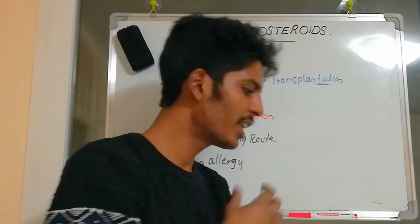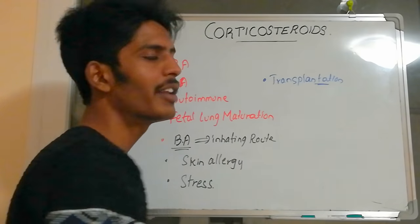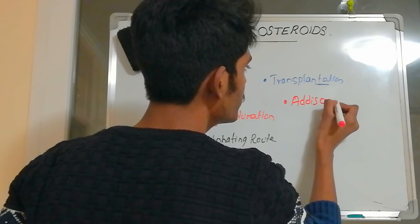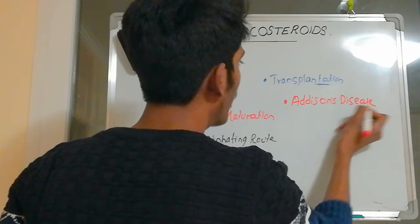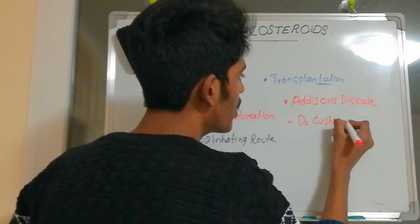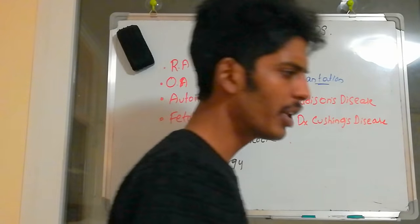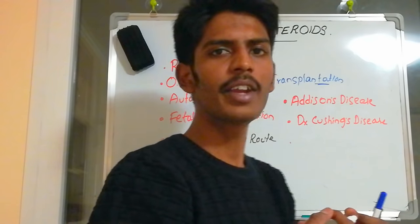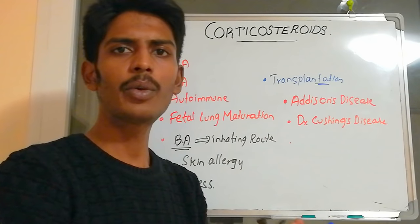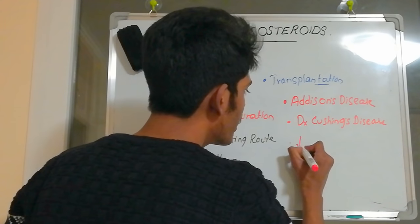Corticosteroids are produced from the adrenal cortex. In Addison's disease, there is no production of steroids, so corticosteroids are used as replacement therapy. They are also used in the diagnosis of Cushing's disease. Additionally, when ACTH production from the pituitary is decreased, there is no stimulation of the adrenal gland and no cortisol formation, so corticosteroids are used during decreased ACTH production.